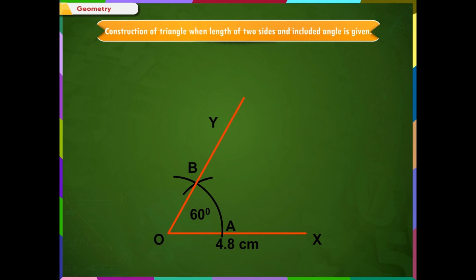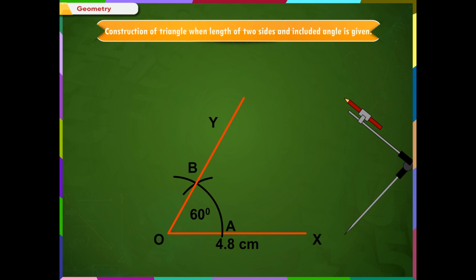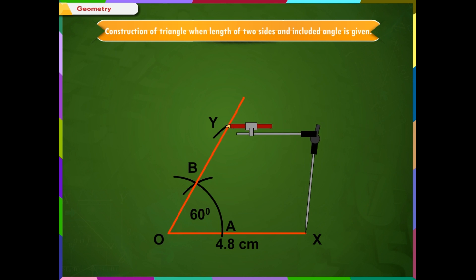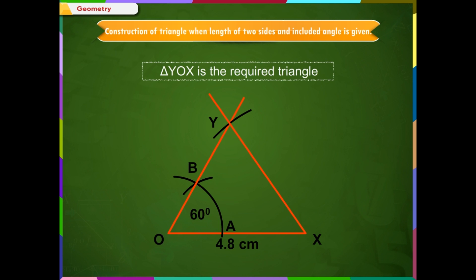Step 4: Take the compass and measure 5.2 cm using a ruler. Taking X as center, cut an arc on the ray OY. Step 5: Join Y and X. Triangle YOX is the required triangle.